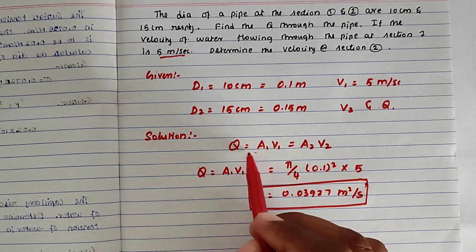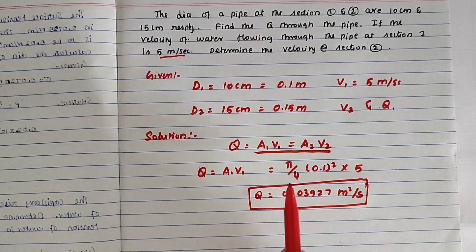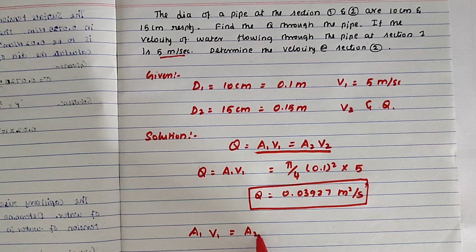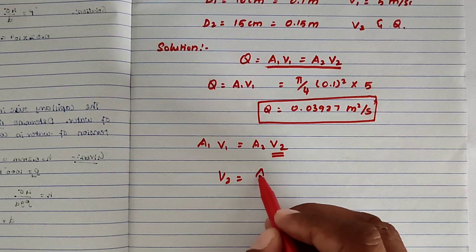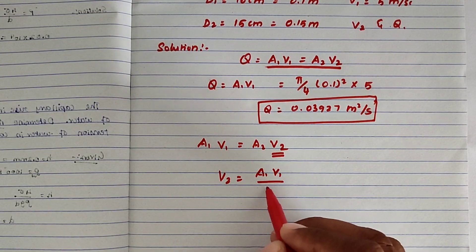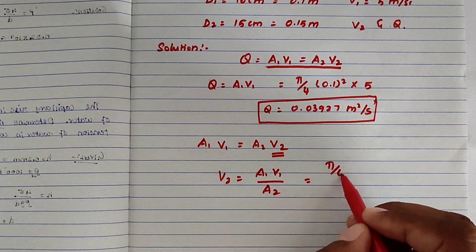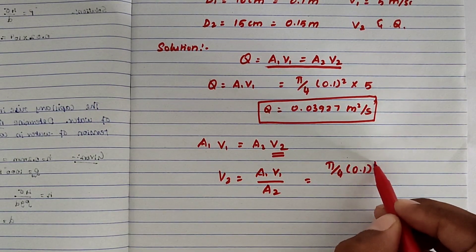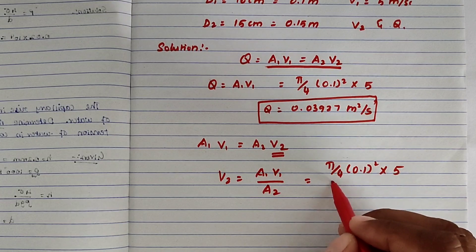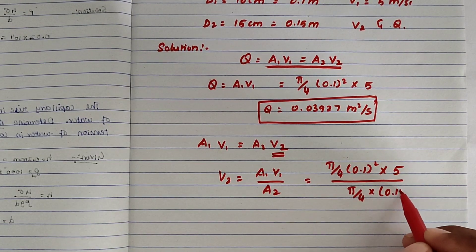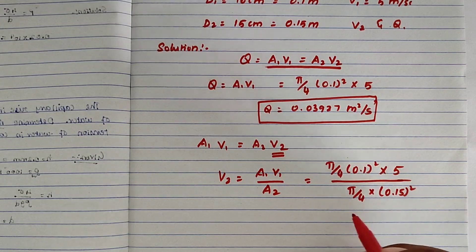From that equation we can find V2. A1V1 equals A2V2, so V2 equals A1V1 divided by A2. Substituting: pi by 4 into 0.1 square into 5 meter divided by pi by 4 into 0.15 square.